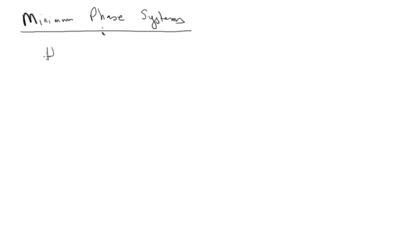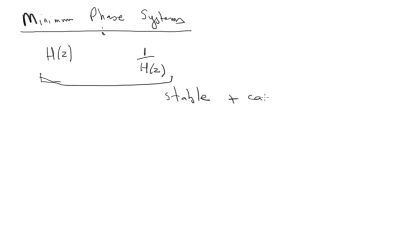If a system H(Z) and its inverse 1/H(Z) both are stable and causal, then H(Z) is known as a minimum phase system. Minimum phase systems are very useful — we will see their usage in today's lecture. A minimum phase system is one whose inverse is also stable and causal.